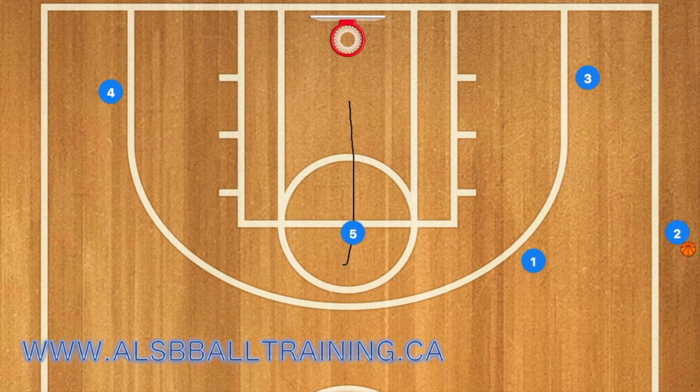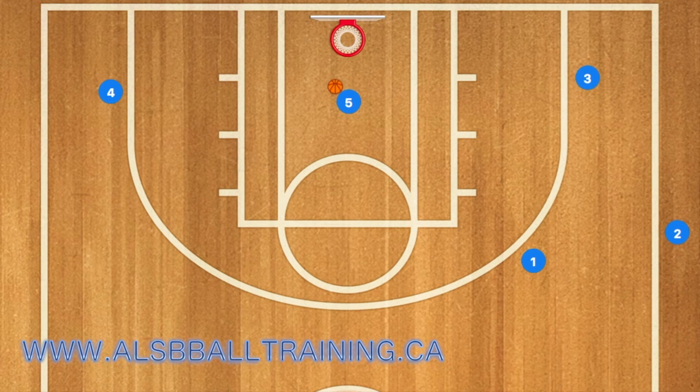One will use that screen and may be open for a three-point shot. If not, five will then roll off of that screen and he should be open for a layup.